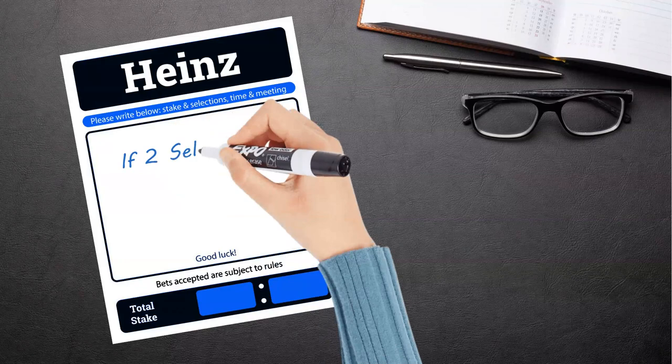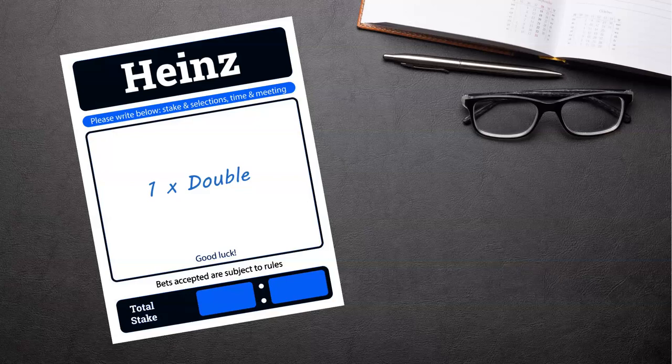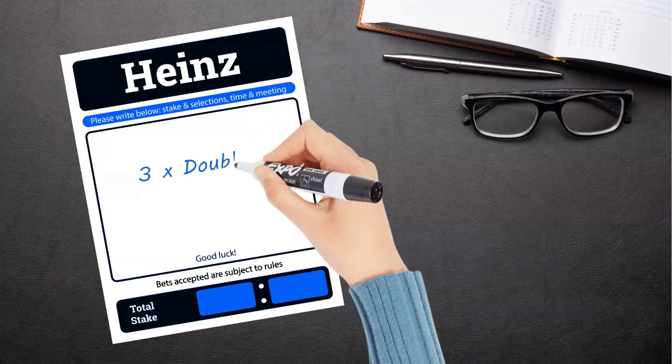If two of your selections win, you will get paid out on one of the 57 bets, that's one of the doubles. If three selections win, you'll get paid on four of the bets, that's three doubles and one treble.